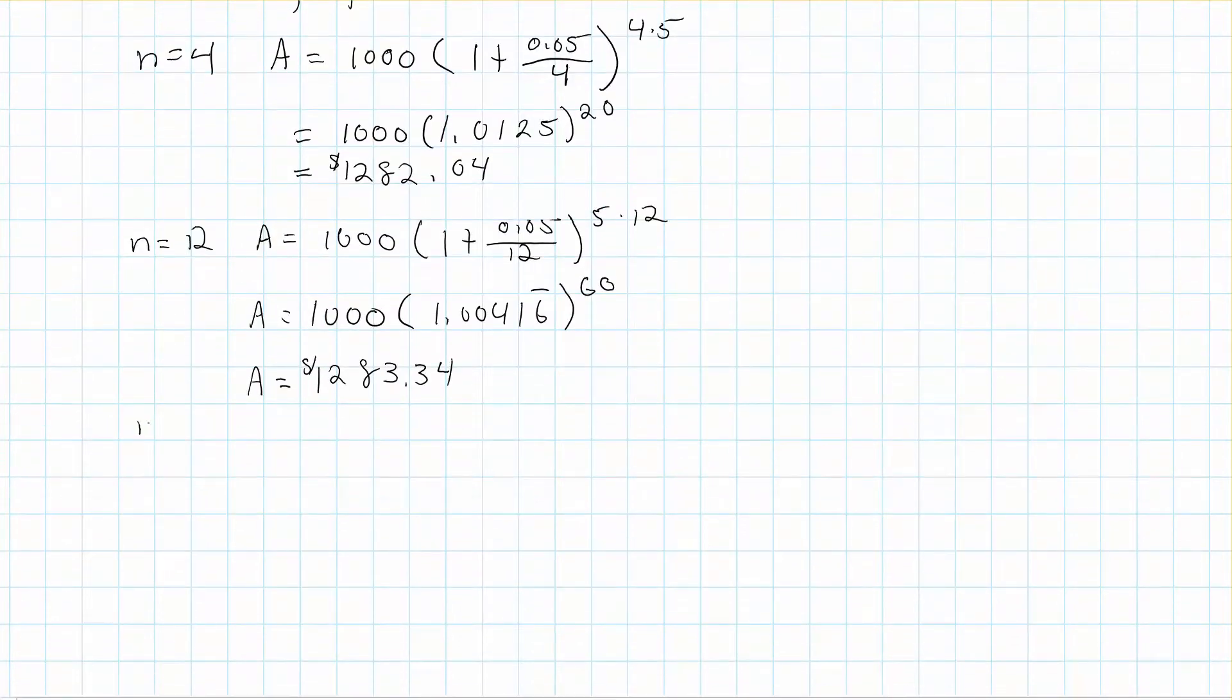So, let's just go ahead and do n equals 365. And I will have then A is equal to 1,000 times 1 plus 0.05 over 365 to 5 times 365. Now, I'm just going to go ahead and do this in my calculator here as opposed to writing it out. And in this case here, you get A is equal to $1,284.00. So, technically we still got even a little bit more money.